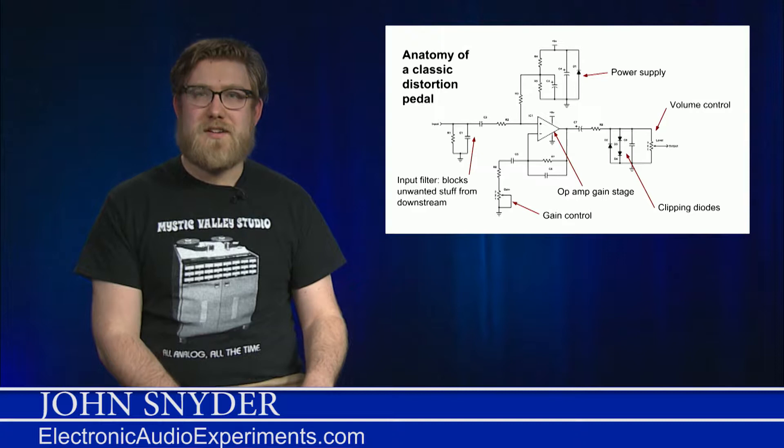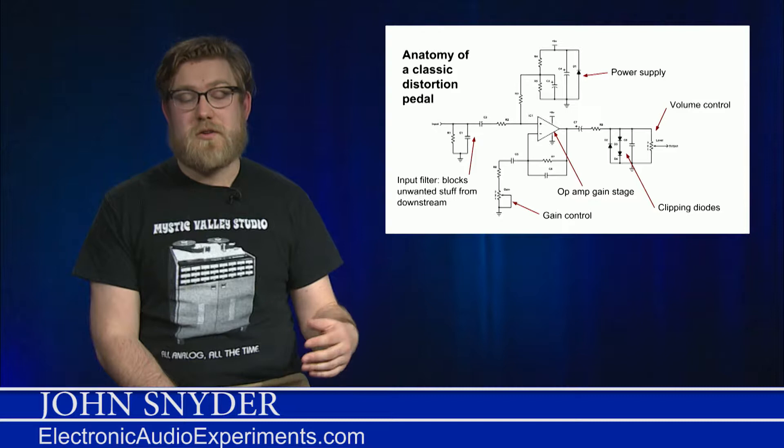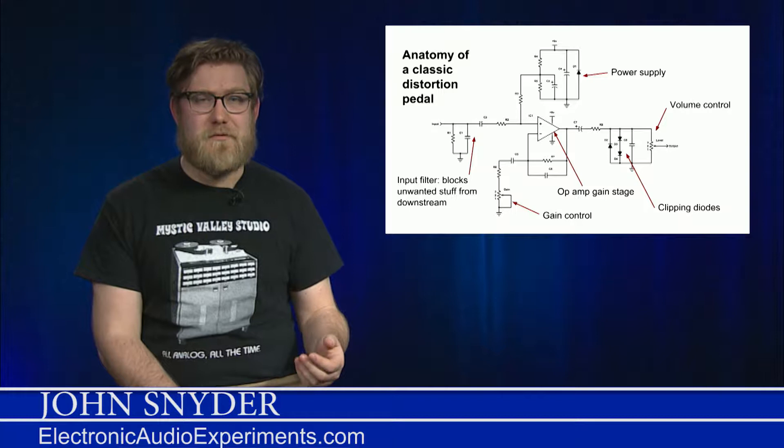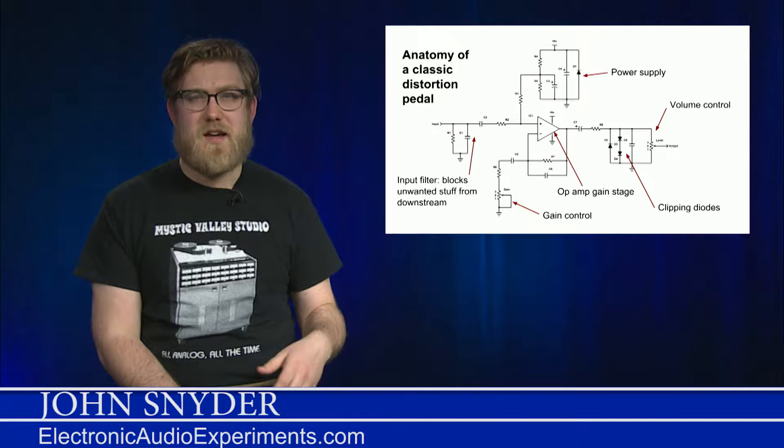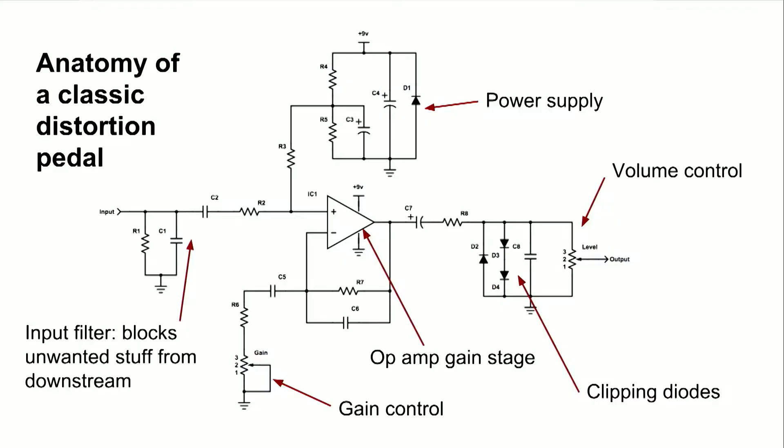So what is the anatomy of a classic distortion pedal? Here we've got a whole bunch of components. Where the signal comes in on the left is a filter. And that filter is just going to get rid of some unwanted stuff from your guitar signal. It's going to get rid of things like popping and RF noise and all that stuff that just isn't very helpful. This filter is formed from resistors and capacitors. We haven't talked about capacitors much. But capacitors are essentially a device which has an impedance or resistance which depends on frequency. And so you can make filters out of those to pick and choose what frequencies you want to keep and which ones you want to throw away.